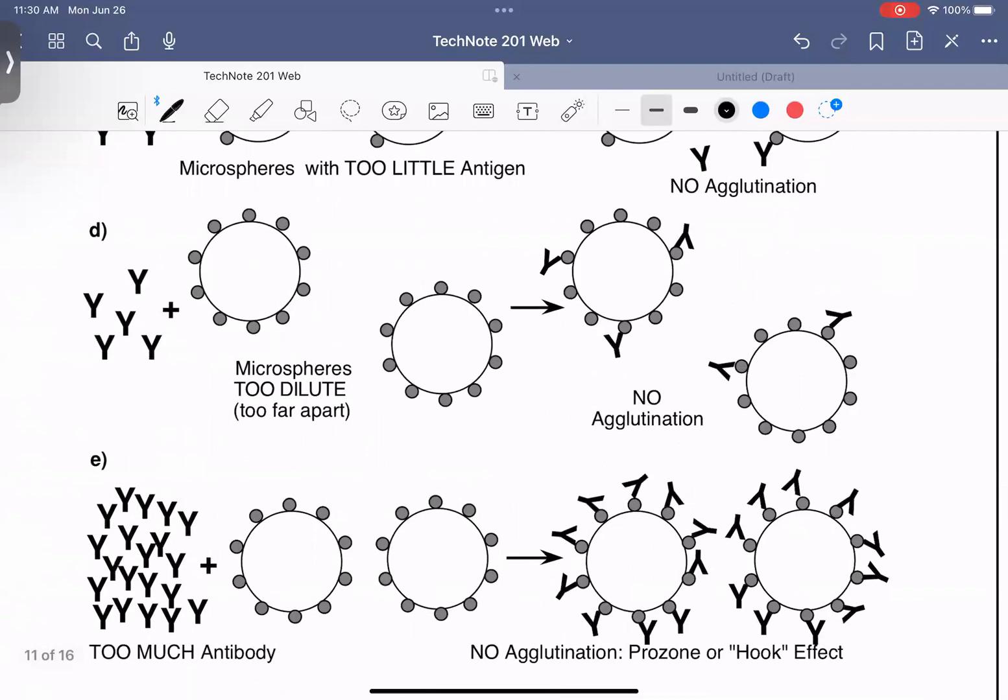The next thing is microspheres are too dilute, too far apart. This is also something that you're working with in your optimization protocol is how many microspheres do you want. So here we have the correct ratio of antibodies and antigens, but the microspheres are just too far apart. They're not getting close enough to interact.